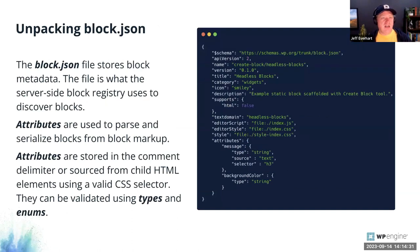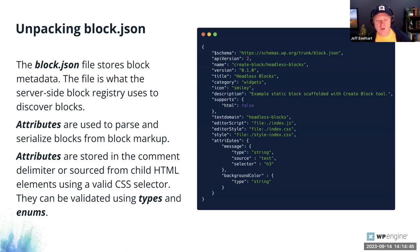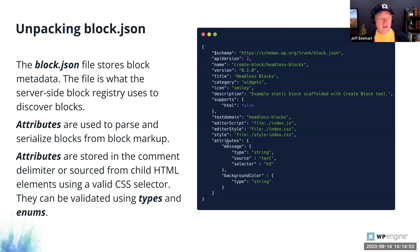The block.json file contains things like schema, name, versioning, title, and categories that affect how the block appears in the inserter. What matters most to headless app developers are the attributes — the individual pieces of data we want to pull out and display. In this custom block example, I have two attributes: a 'message' of type string, and a 'backgroundColor' also of type string.